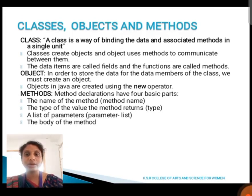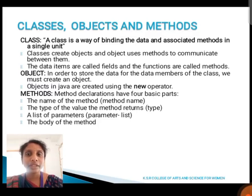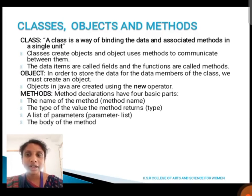Next, we are going to see about classes, objects, and methods. A class is a way of binding the data and associated methods in a single unit. A class creates objects, and the objects use methods to communicate between them. The data items are called fields and the functions are called methods. In order to store data for the data members of a class, we must create an object. Objects in Java are created using the new operator. A method declaration has four basic parts: the name of the method, the return type of the method, the list of parameters, and the body of the method.